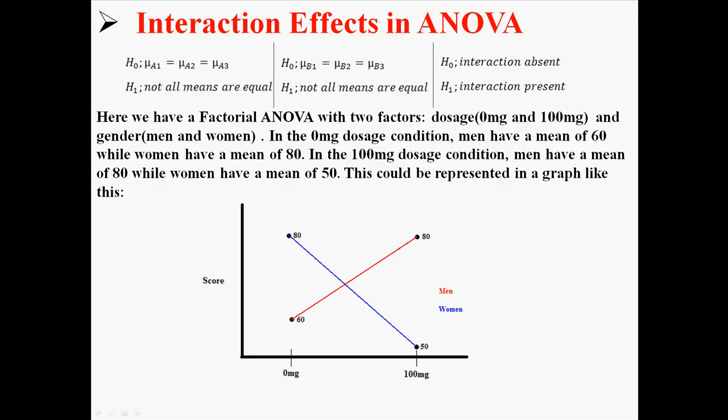So for example, at 0mg, men are lower than women, but at 100mg, men are higher than women. So really, the effect of gender depends on what level of dosage you're at, and the effect of dosage depends on what level of gender you're at. The variables have interacted in this way, and that's what it means for there to be an interaction effect in your ANOVA.